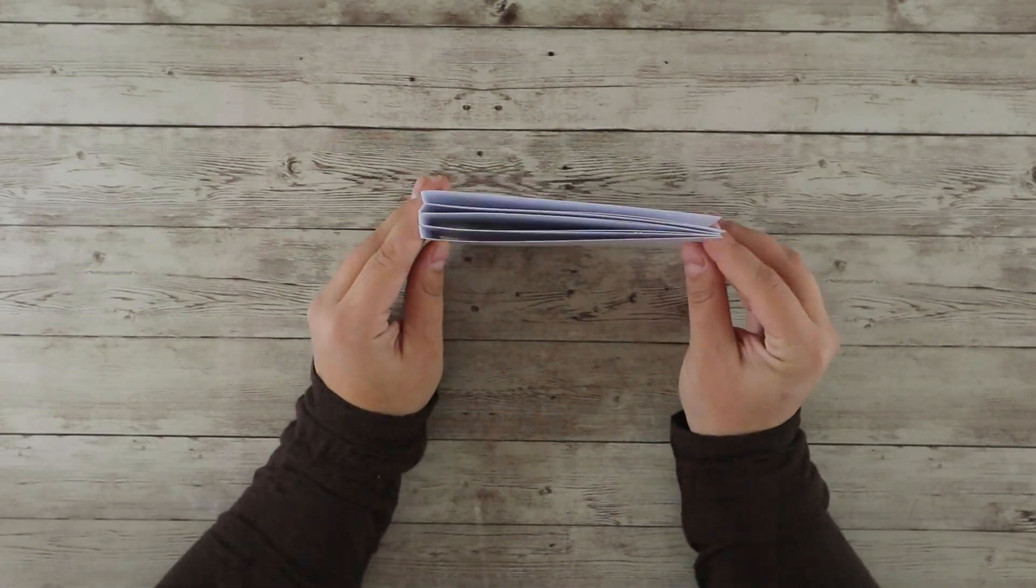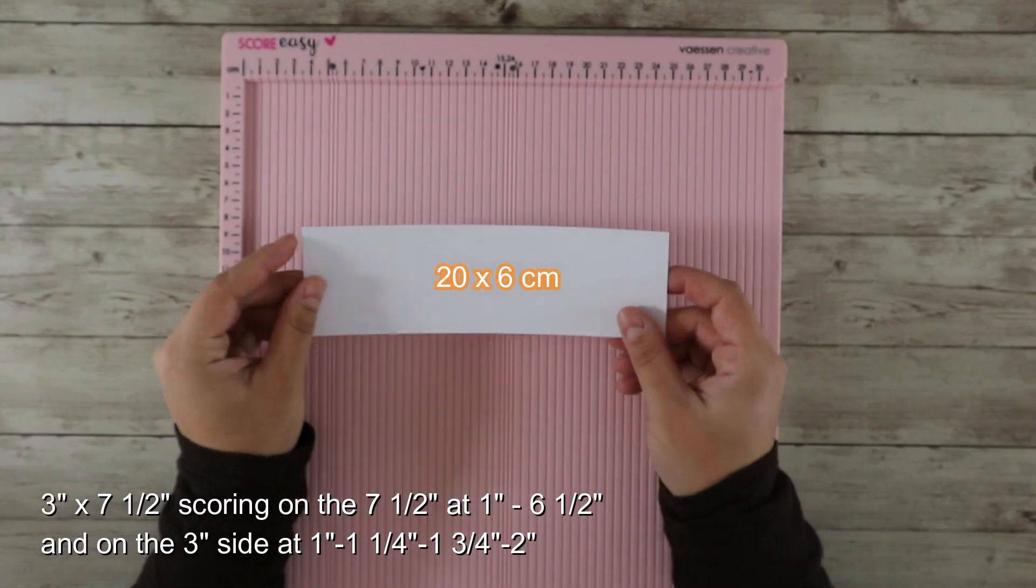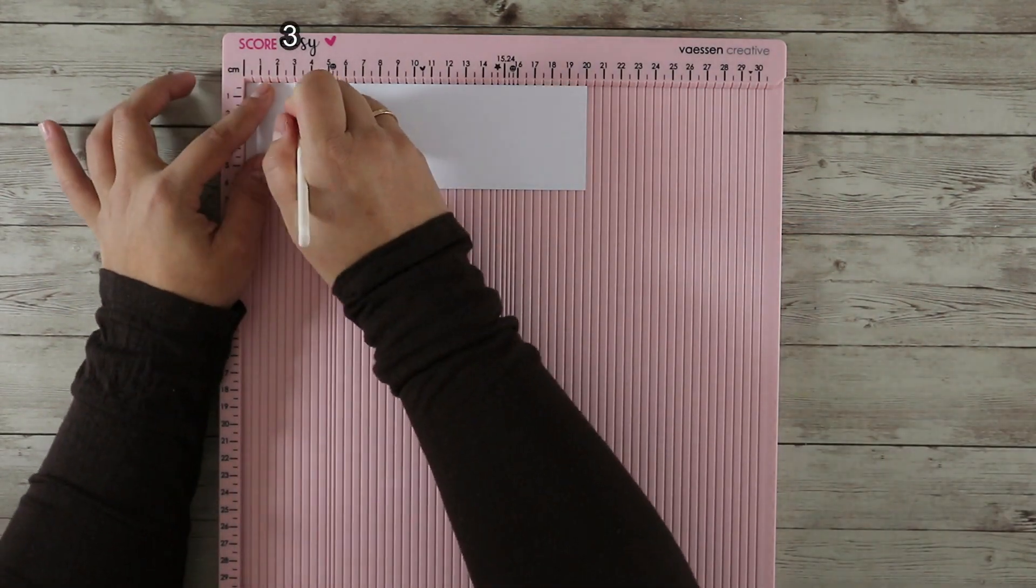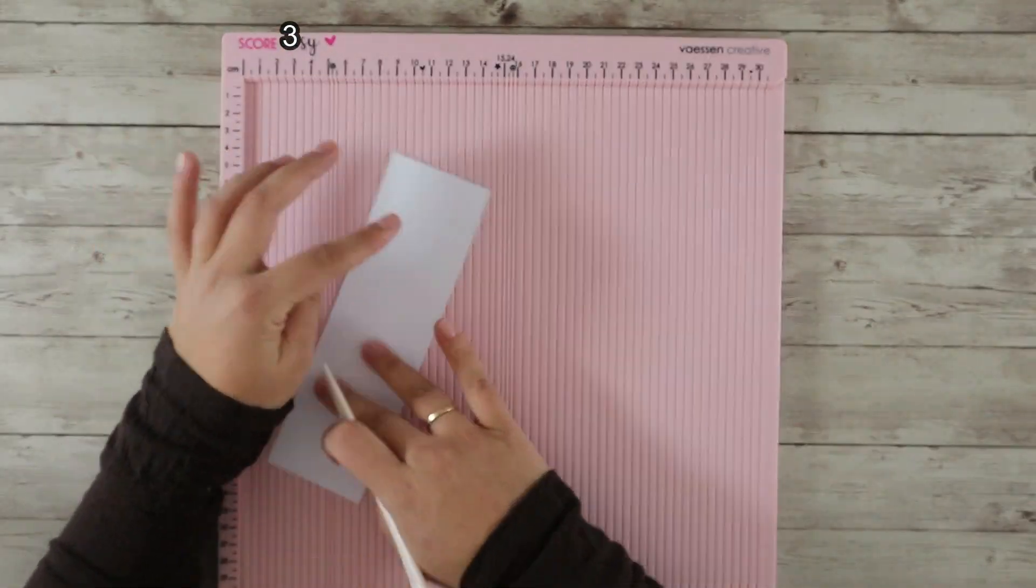To make the curved spine I'm using a piece of white cardstock 20 x 6 cm and score it on the long side at 3 and 17 cm.